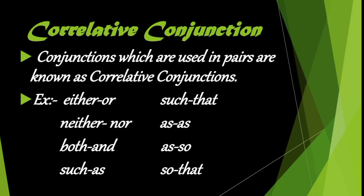First, we have correlative conjunctions. Conjunctions which are used in pairs are known as correlative conjunctions. Some examples are: either/or, such...that, neither/nor, as...as, both...and, so...that. These are words used as correlative conjunctions.